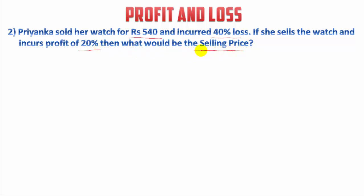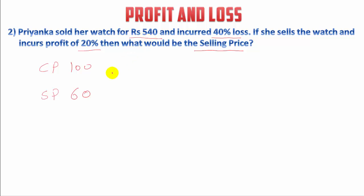In this question we have to find the selling price at a profit of 20 percent. To solve this type of question, we generally take cost price as 100 percent. So cost price is 100 percent. And in this question there is a loss of 40 percent. So selling price will be 100 minus 40, that is 60 percent. And the selling price is also given, that is Rs. 540.